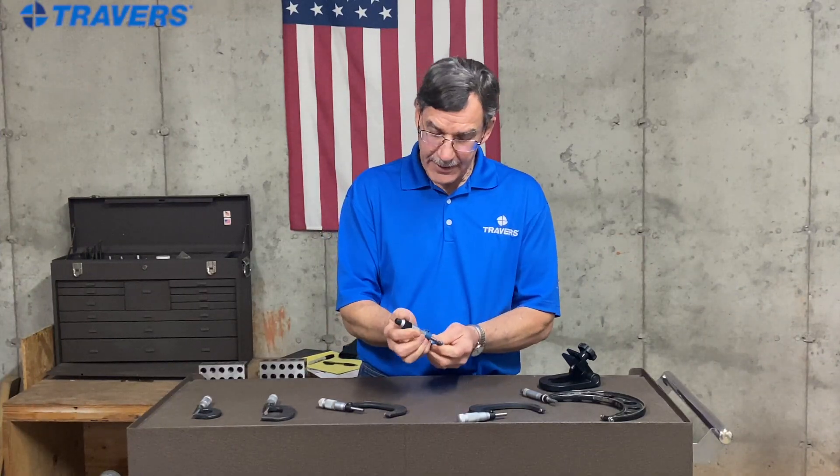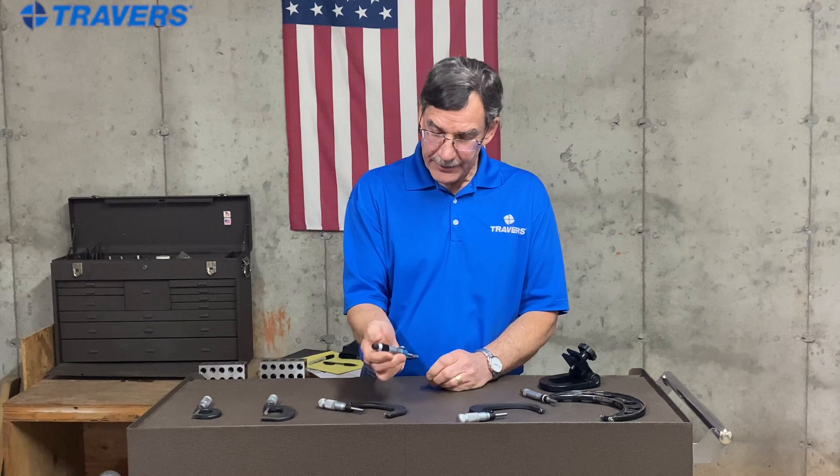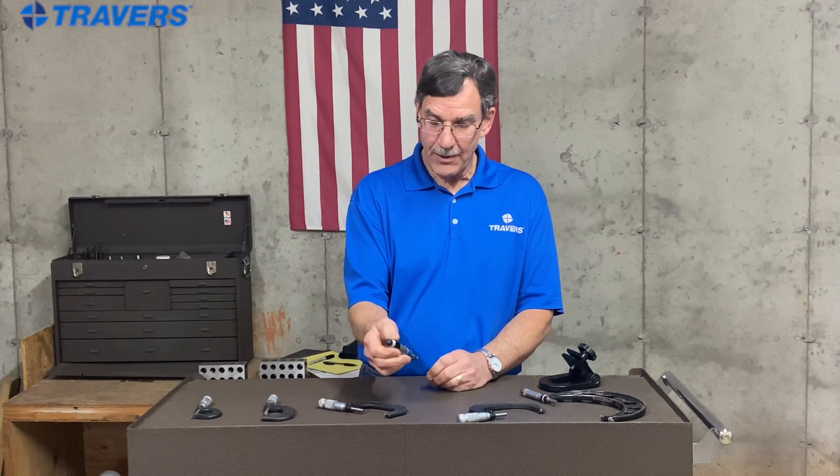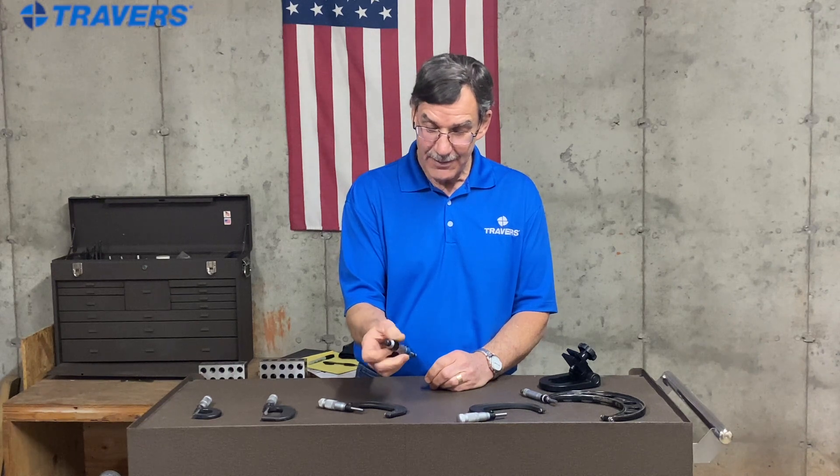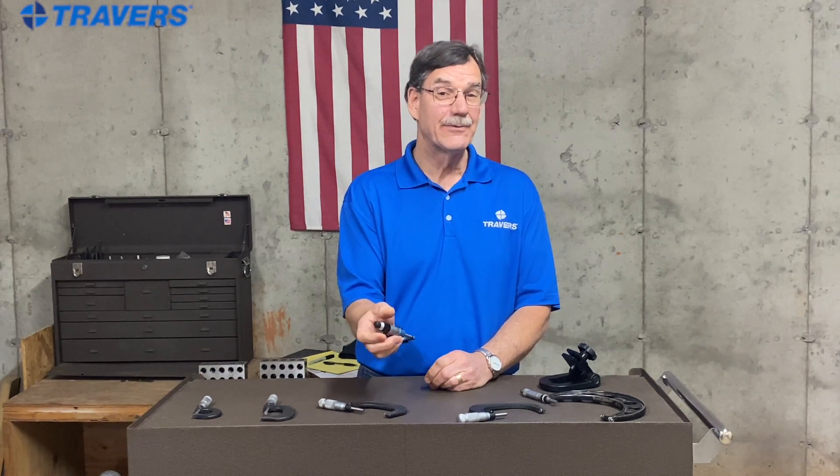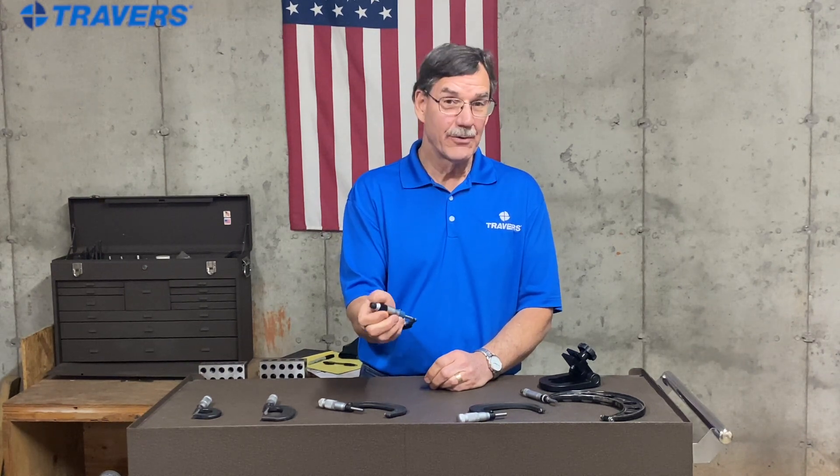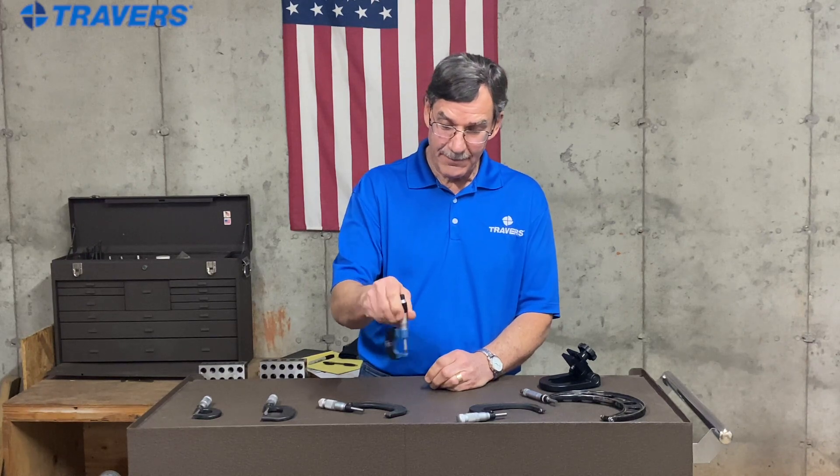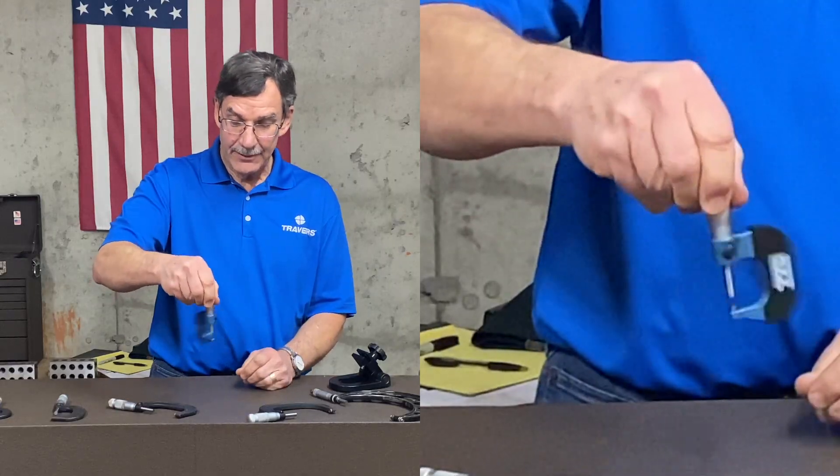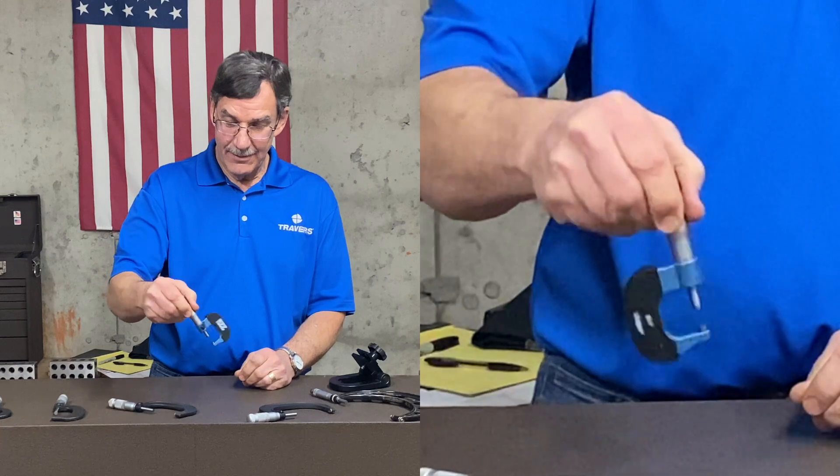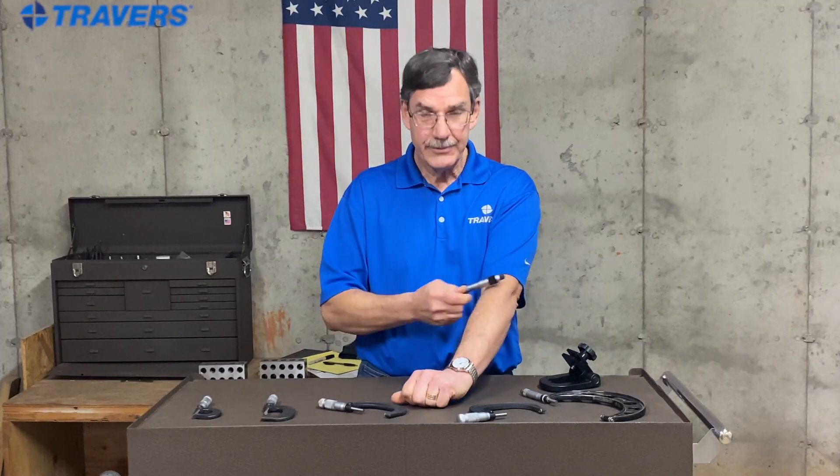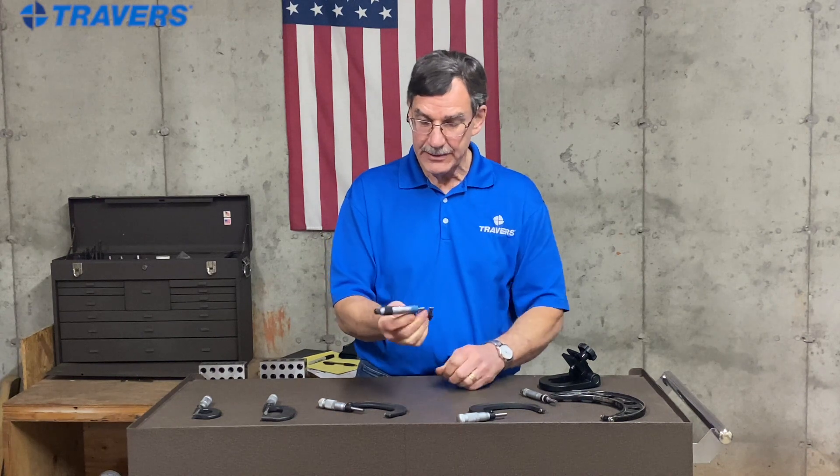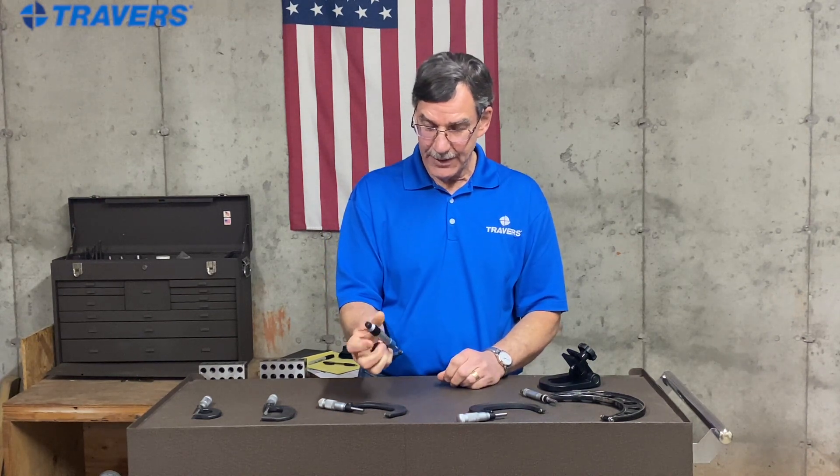Here's a little tip as you're using a micrometer. If you have to go from a small measurement up to a bigger measurement, just turning it this way is going to take you forever. So a couple of different ways you can speed that up. Just kind of spin it like that and see how quickly that opens. Or just run it along your arm. Much easier than just turning it in your fingers.